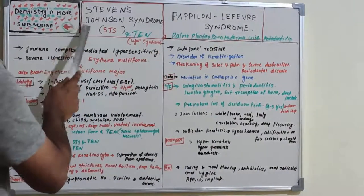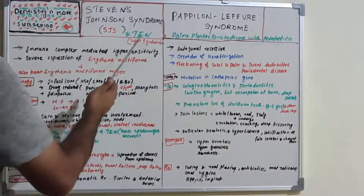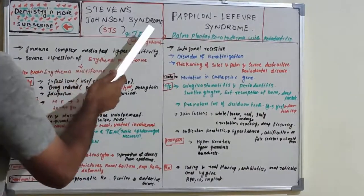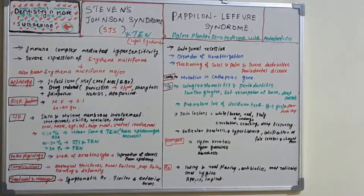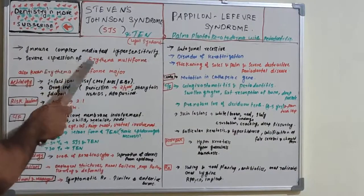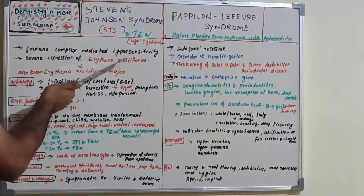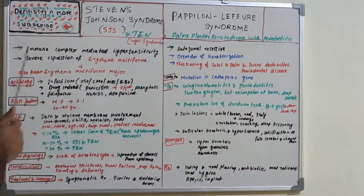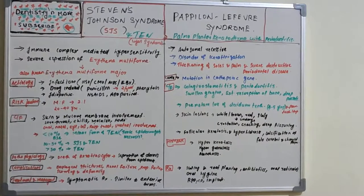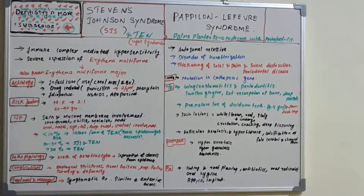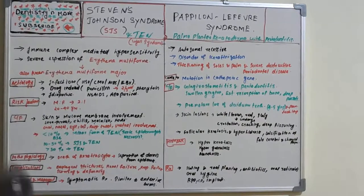To summarize: Stevens-Johnson syndrome is also known as toxic epidermal necrolysis or Lyell's disease in its severe form, and is itself a severe expression of erythema multiforme — the severity progresses from erythema multiforme to SJS to TEN. Papillon-Lefèvre syndrome is an autosomal recessive disorder of keratinization causing tooth loss and palmar/plantar keratinization. More syndromes, including Frey syndrome, Gorlin-Goltz syndrome, Plummer-Vinson syndrome, and Down syndrome, have been covered previously, with more to come.